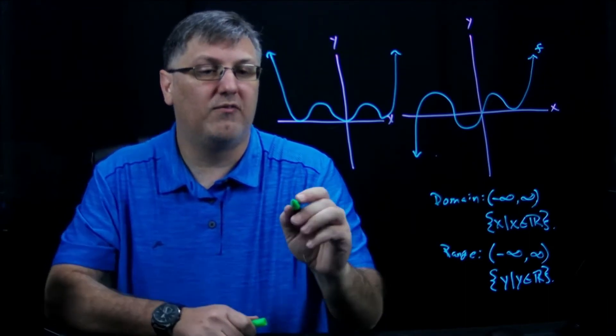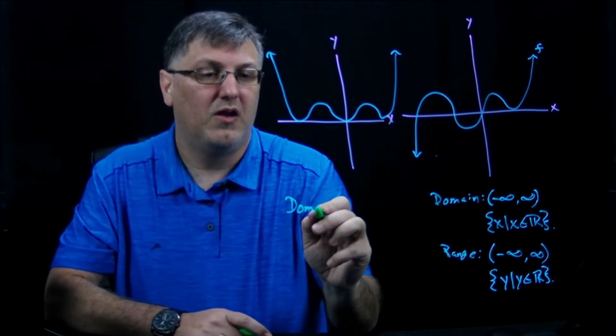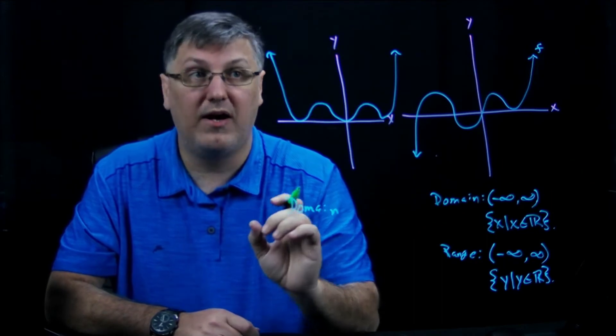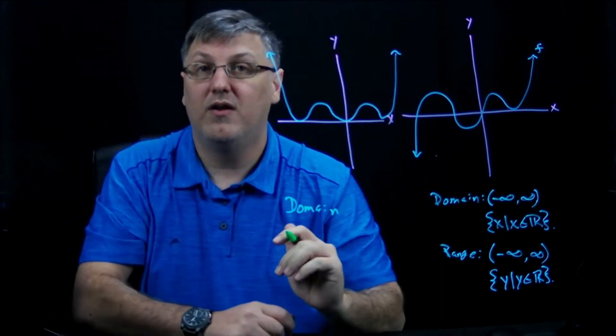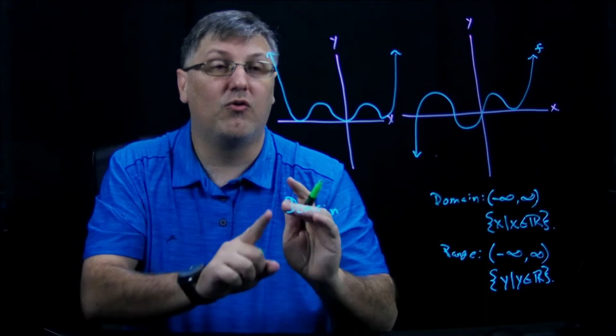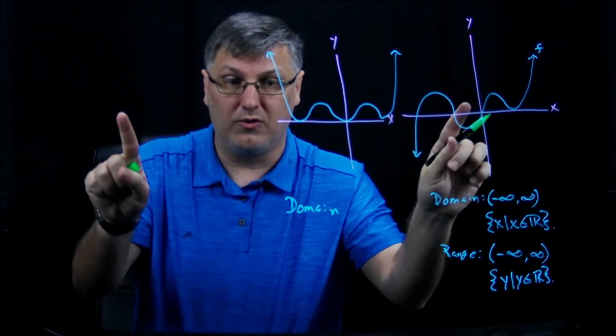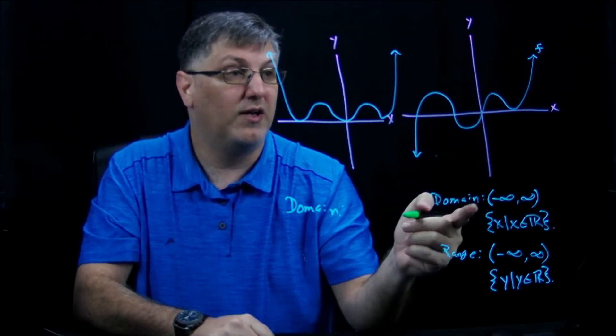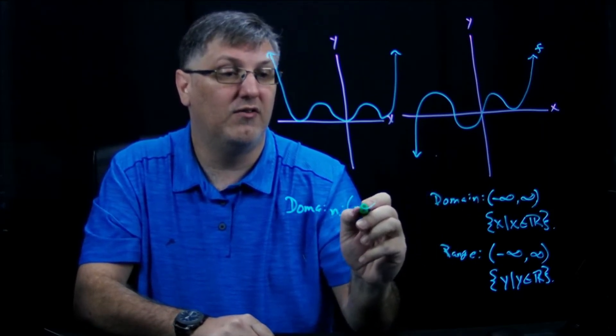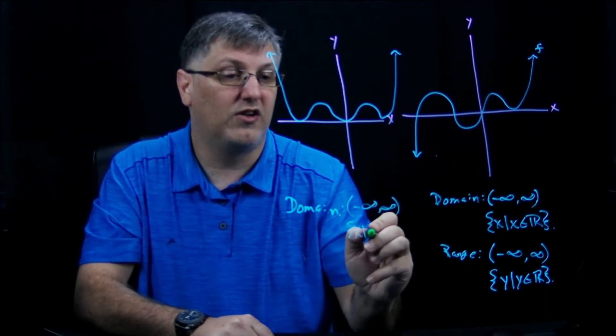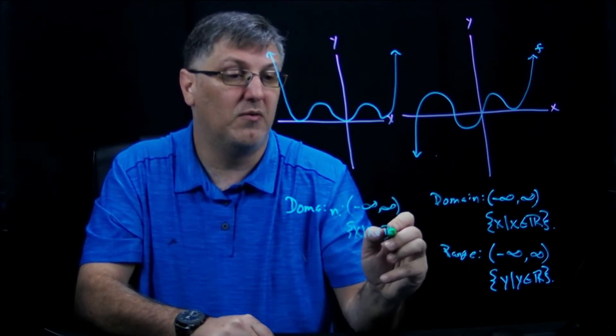If I want to find the domain of this one, I'm still going to look at my arrows. So my arrows are going up. So I know my domain is going forever this direction because my arrows are always going up and out. So they're going this direction. So my domain is the same as over here, negative infinity to infinity, or the set of all x such that x is an element of the real numbers.